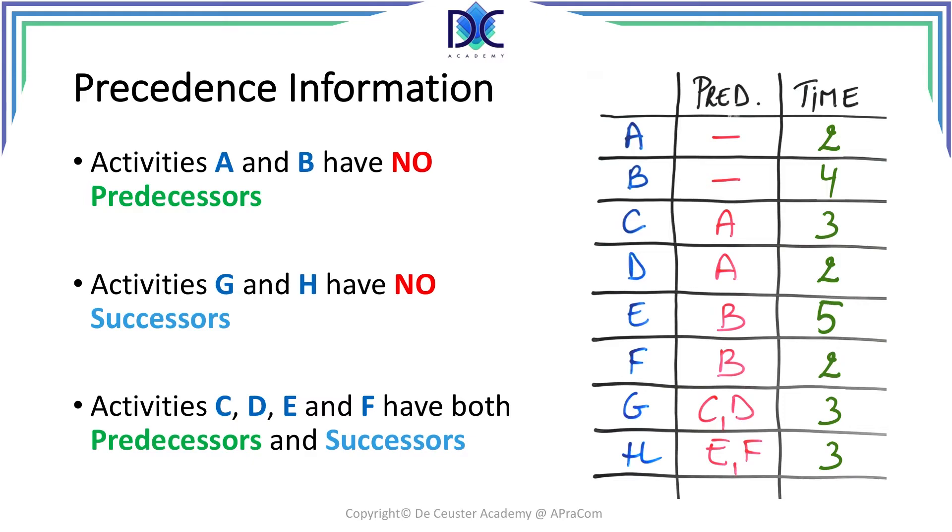We see the first two activities A and B. They have no predecessors, so they are at the beginning of the project. Activities G and H have no successors. There is no more follow-up work once those two tasks are being completed, so they have no successors. They are at the end of the project.